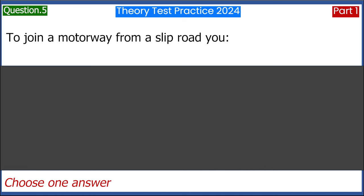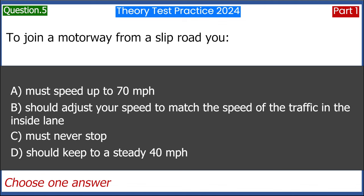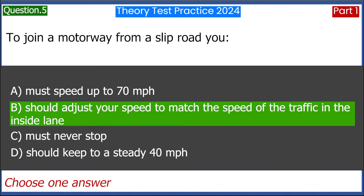To join a motorway from a slip road you: A. Must speed up to 70 miles per hour. B. Should adjust your speed to match the speed of the traffic in the inside lane. C. Must never stop. D. Should keep to a steady 40 miles per hour. Answer: B. Should adjust your speed to match the speed of the traffic in the inside lane.